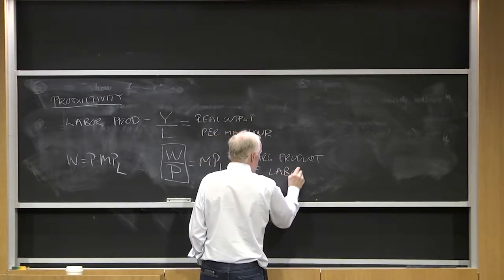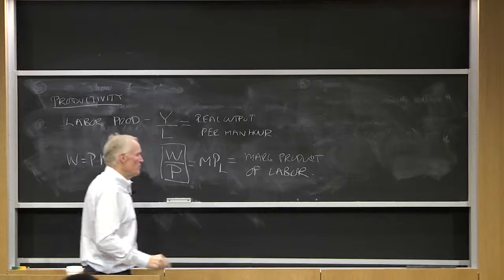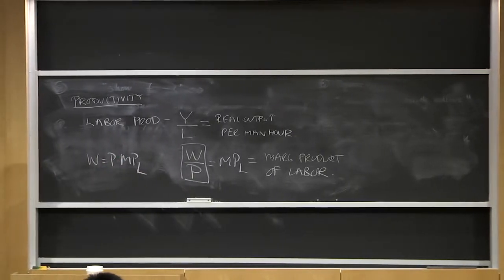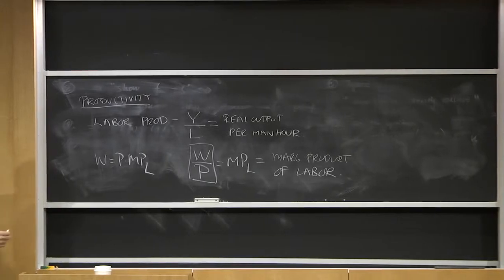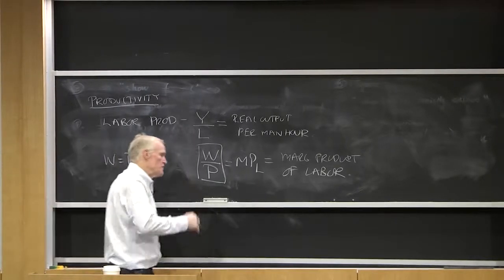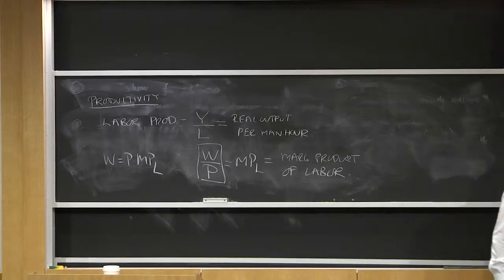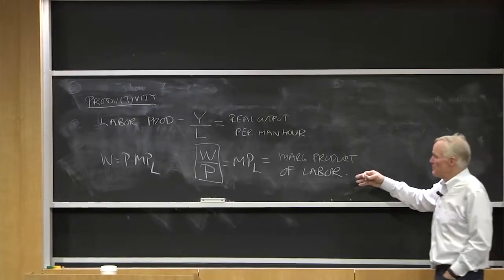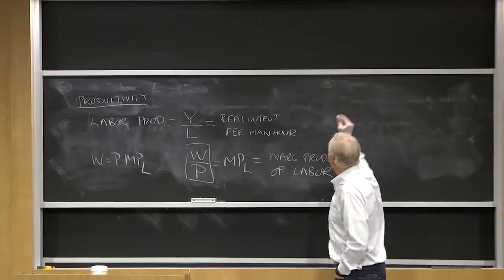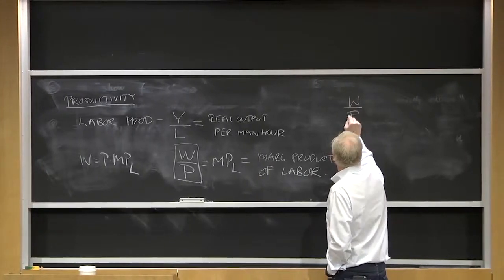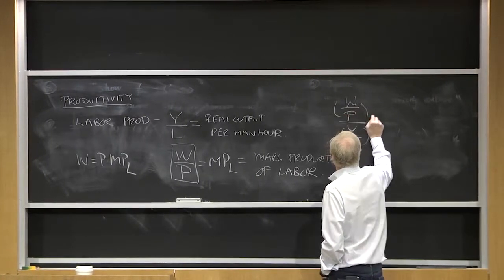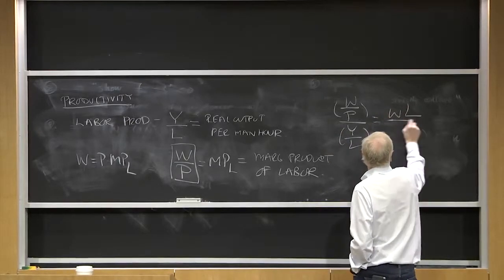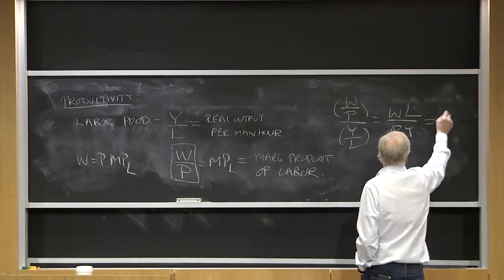So we have two ways in which we can think about measuring growth in labor productivity over time. We can either measure increase in output per man-hour, or we can measure increases in the real wage. Now, of course, the ratio of these two numbers, W over P divided by Y over L, is just equal to WL over PY, equals the share of labor.